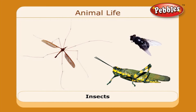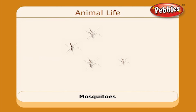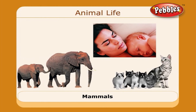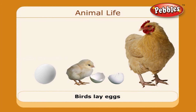Insects are very small animals. We can find them at homes and gardens. There are a lot of mosquitoes in my home — I hate mosquitoes! Human beings and some animals give birth to young ones; they are called mammals. Birds lay eggs.